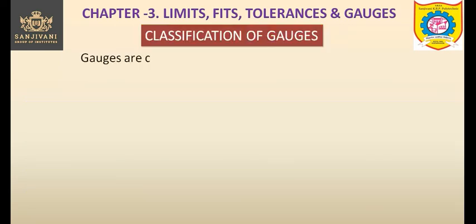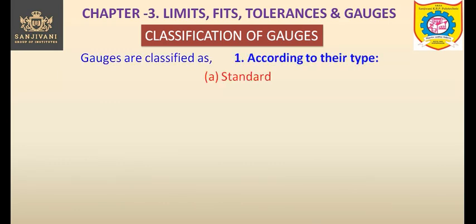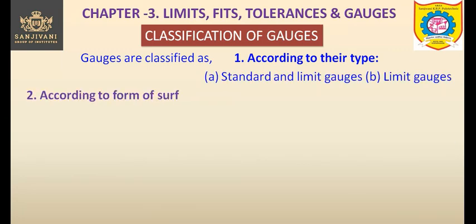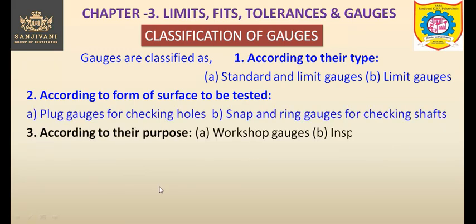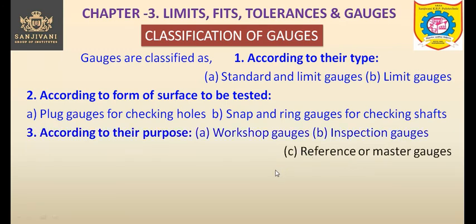Gauges are classified in several ways. First, according to their type: standard gauges and limit gauges. Second, according to the form of surface to be tested: plug gauges for checking holes, and snap and ring gauges for checking shafts. Third, according to their purpose: workshop gauges, inspection gauges, and reference or master gauges.